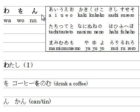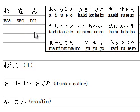N is a very special character. It doesn't appear at the beginning of a word — n always appears in between a word or at the end of a word.